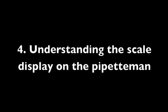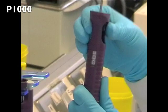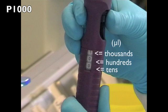Understanding the scale display on the pipetman is essential to accurate pipetting. On the P1000, the first number displayed, which is red, represents thousands of microliters. The second number represents hundreds of microliters, and the third number represents tens of microliters. The maximum capacity of the P1000 is 1000 microliters and this should not be exceeded, as it will damage the pipette and can result in inaccuracy for other users.